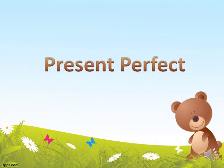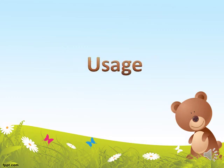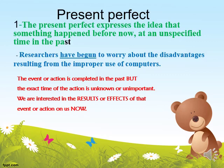Now let's move on to the present perfect tense. We use the present perfect to express the idea that something happened before now at an unspecified time in the past. For example: researchers have begun to worry about the disadvantages resulting from the improper use of computers. The event is completed in the past but the exact time is unknown or unimportant.